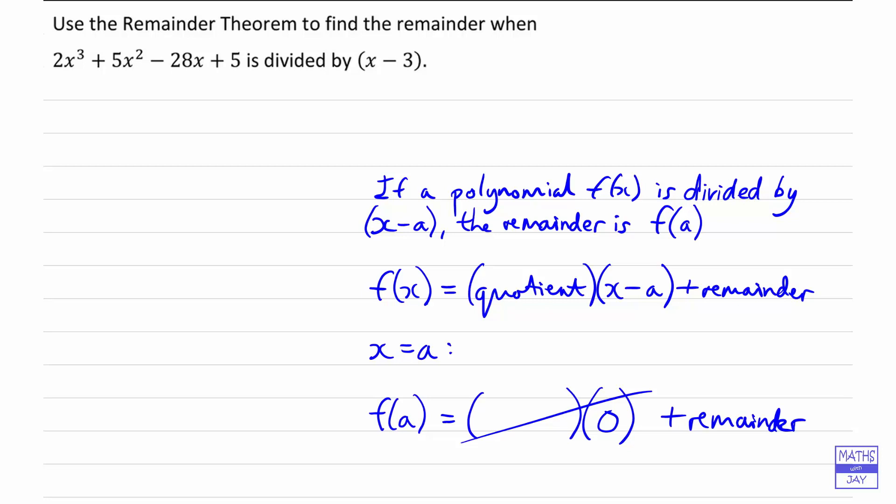So in the case that we're looking at here, if we write down f of x as our polynomial, all we need to do is work out the value of it when we put x equal to 3.